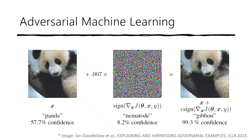Adversarial Machine Learning is a technique to attack a machine learning model. Many of you must have seen this photo. The panda on the left is categorized as panda by the model, but if you add a purposely designed noise to the panda photo, the model categorizes that photo as a gibbon with 99.3% confidence.